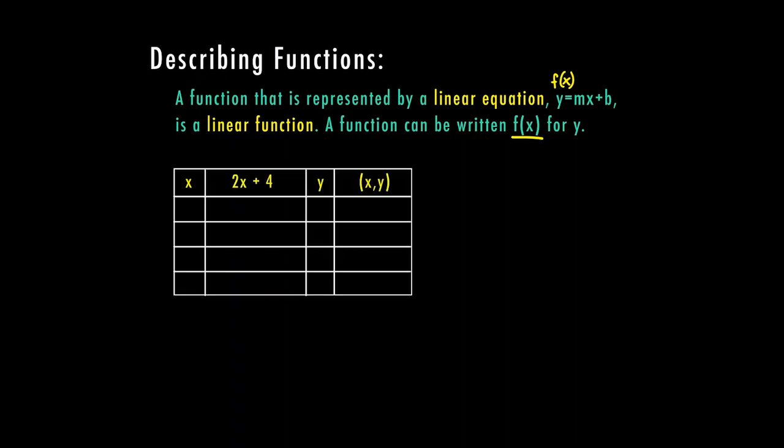So let's look at a table here where we have our x, which is our input. We have our process, 2x plus 4, and we have our output y. So we're going to use this table to plug in some numbers and create our process. So first we're going to plug in a 0. So 2 times 0 plus 4 gives us an output of 4. So my first ordered pair is 0, 4.